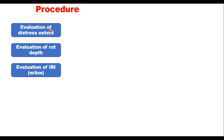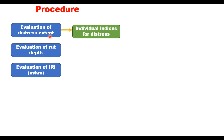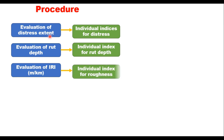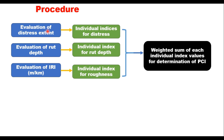The procedure involves three parameters: evaluation of distress extent, evaluation of rut depth, and evaluation of IRI in meters per kilometer. Evaluation of distress extent leads to individual indices for each distress type. Evaluation of rut depth gives an index for rut depth, and IRI gives an index for roughness. These three together provide a weighted sum of individual index values for determination of overall PCI.